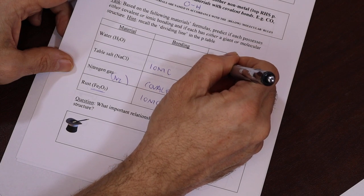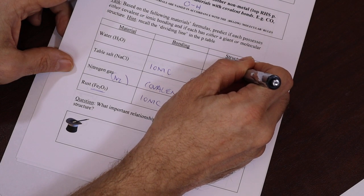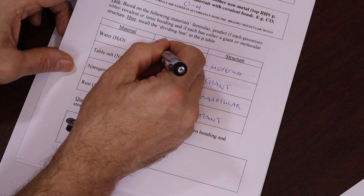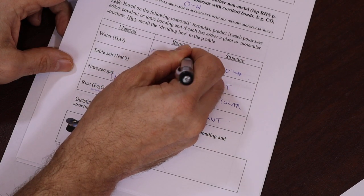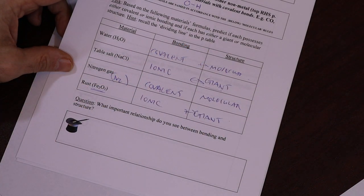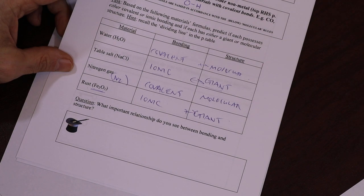So therefore we can make the assumption that it's a covalent bond. It's actually something called polar covalent, which is halfway between ionic and covalent, but for now let's just call it covalent.